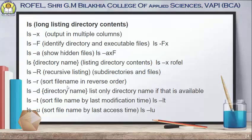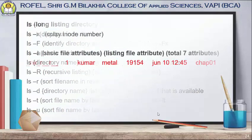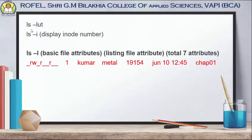ls -r (small r) shows file names in reverse order, meaning reverse sorting. ls -d is used for listing directories only. ls -t is used for showing files sorted by last modification time, used as ls -lt. ls -u is used for showing files sorted by last access time, used as ls -lu.